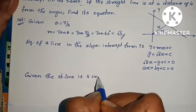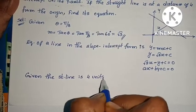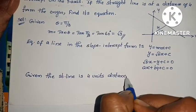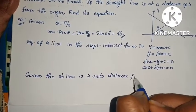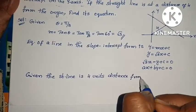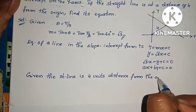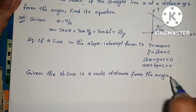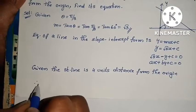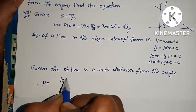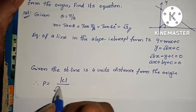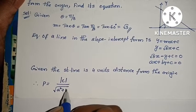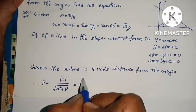The distance from the origin is 4 units. Therefore, using the distance formula p = |c| / √(a² + b²).